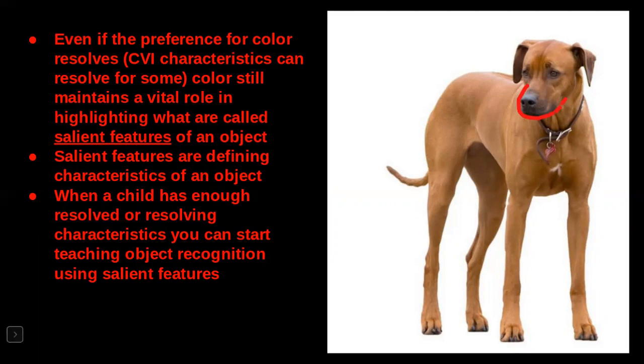When a child has moved beyond maintaining attention to a visual task and some of their characteristics of CVI are resolved or resolving, you can start to teach object recognition using the salient features of the object. Cuando un niño tiene suficientes características resueltas o resolviendo, puede comenzar a enseñar reconocimientos de objetos utilizando características sobresalientes.